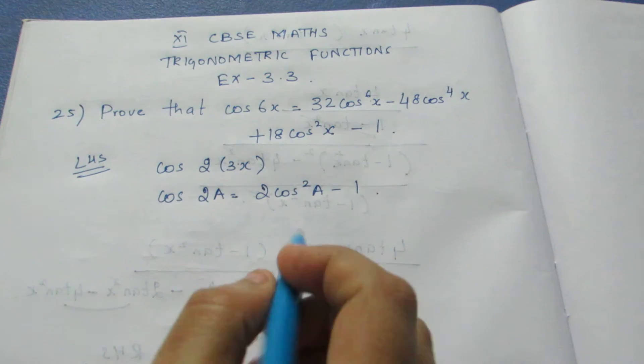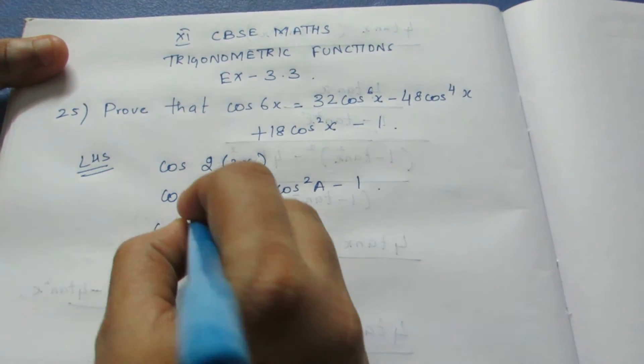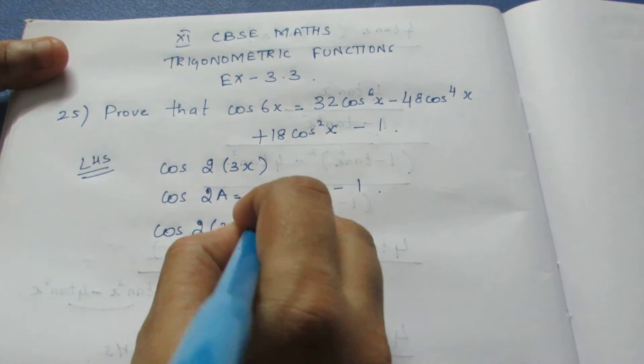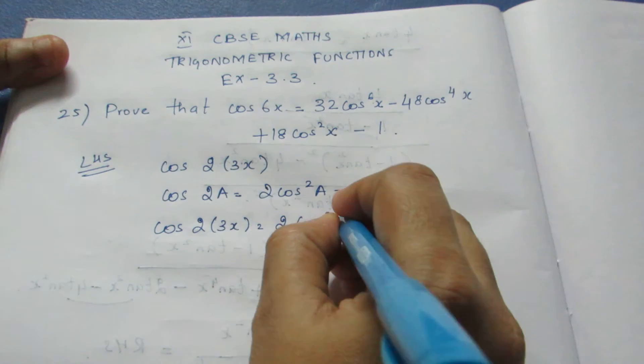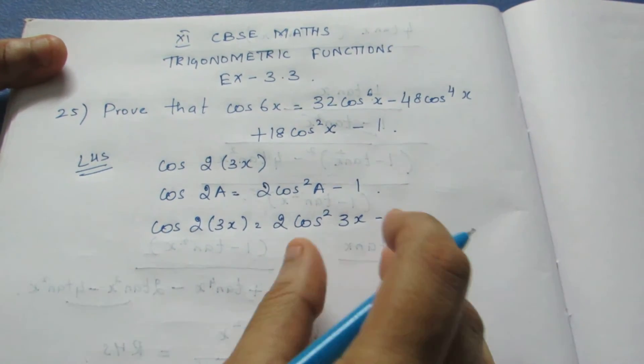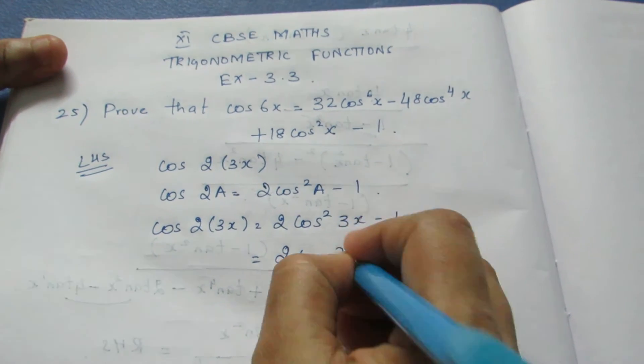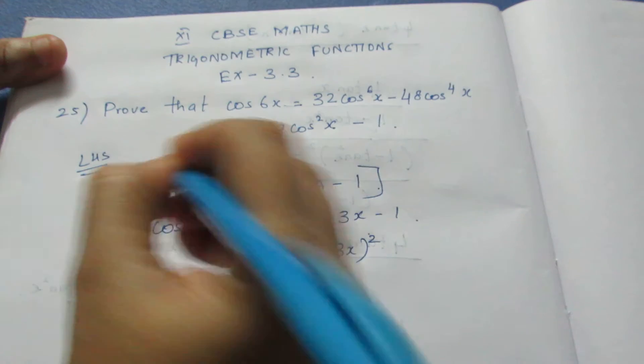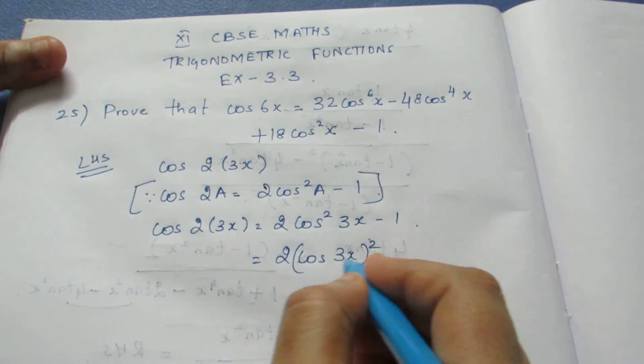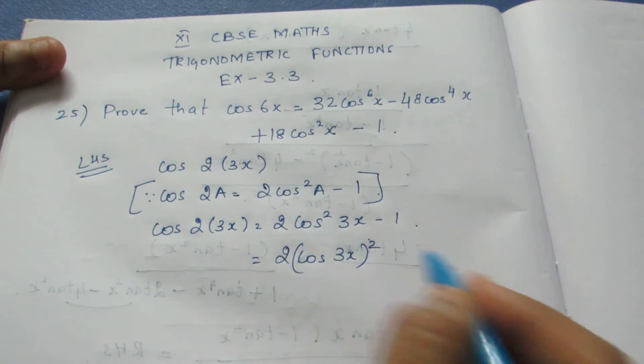So instead of a, it is 3x here. Cos 2 into 3x equals 2 into cos²3x minus 1. This is cos 3x the whole square.